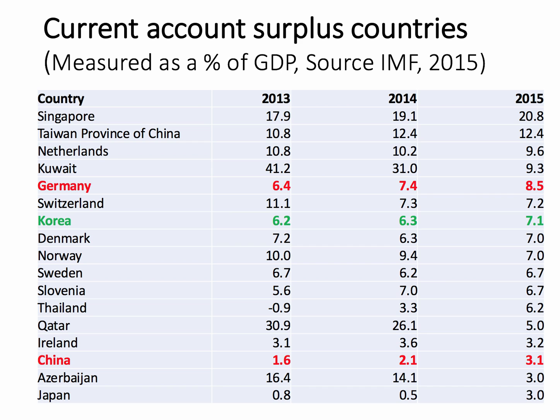Singapore, for example, runs a current account surplus of nearly a fifth of its national income most years. Other countries appear near the table: Taiwan, a leading export nation; Kuwait, heavily dependent of course on oil; Germany, the world's biggest manufacturing exporter; and countries such as South Korea which over the last 15-20 years have done tremendously well to reach high income advanced country status. These are countries which year in year out run a significant current account surplus, and in this topic video we're going to think about why that happens.